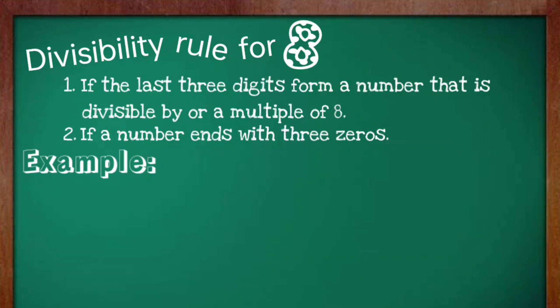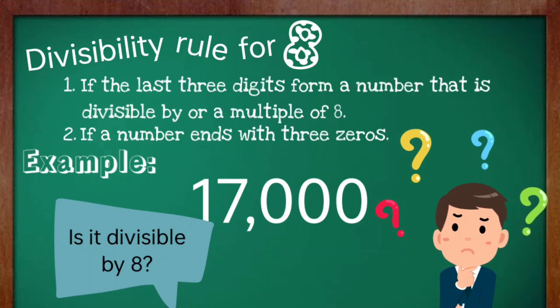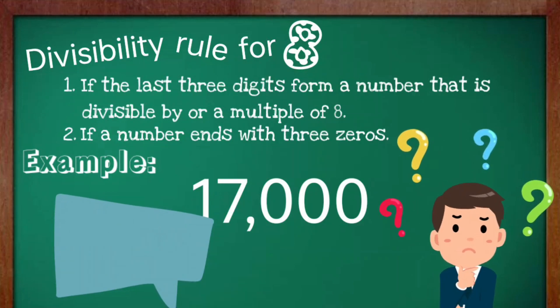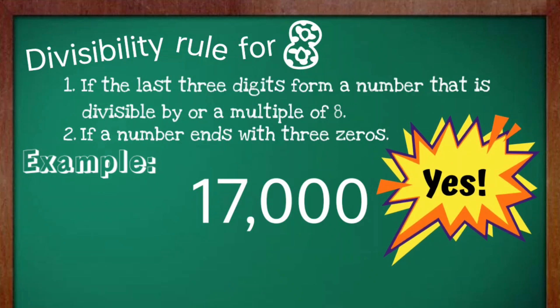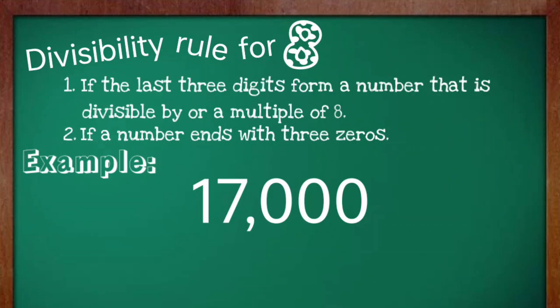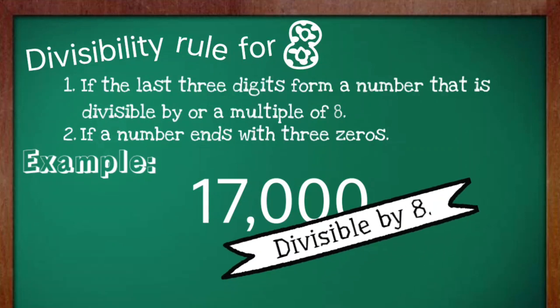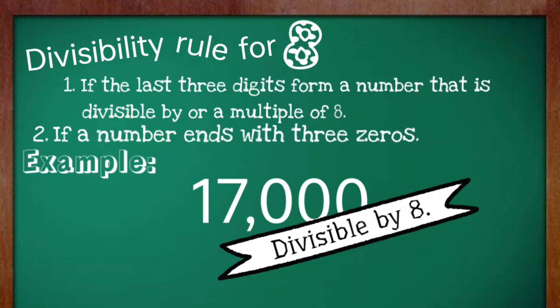How about 17,000? Is it divisible by 8? Yes, it is. Since the number ends with three zeros, therefore it is divisible by 8, following rule number 2.